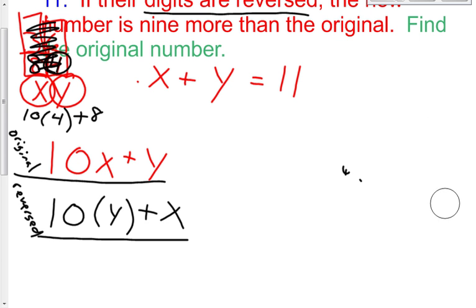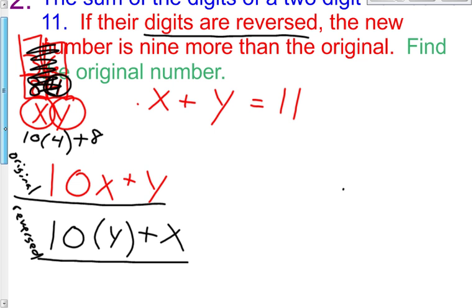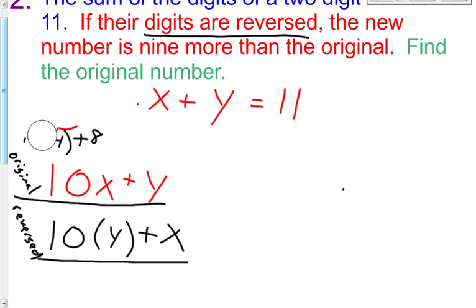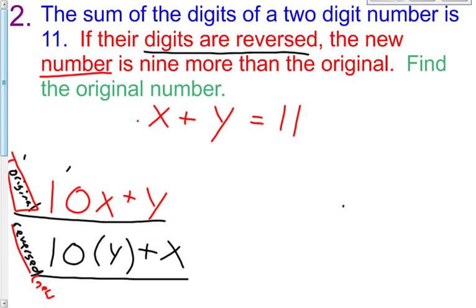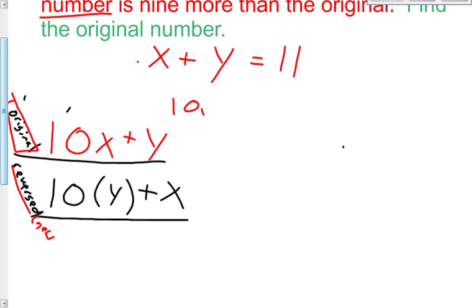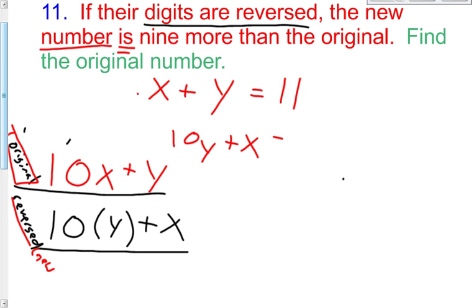So now my second sentence says this: If their digits are reversed, the new number is 9 more than the original. Here's the original. So the new number, which is the same thing as our reversed, the new number 10y + x equals 9 more than the original number, which is 10x + y. There you have it class. You now have your systems of equations.